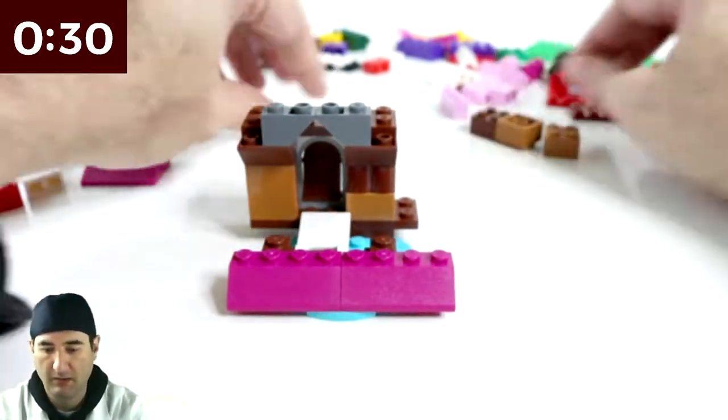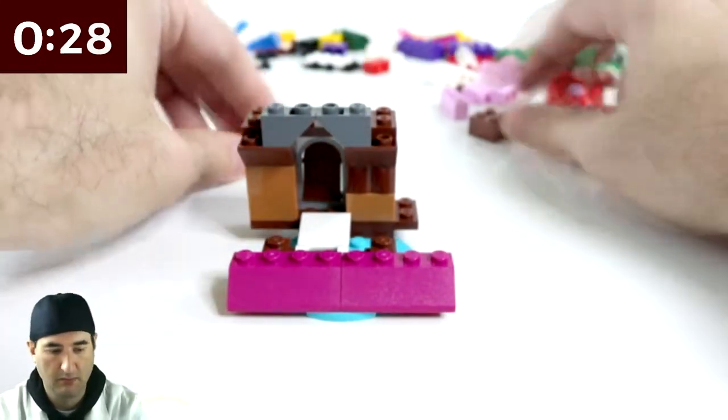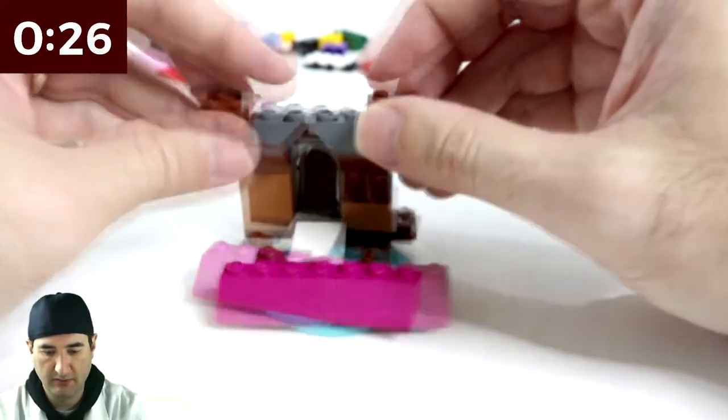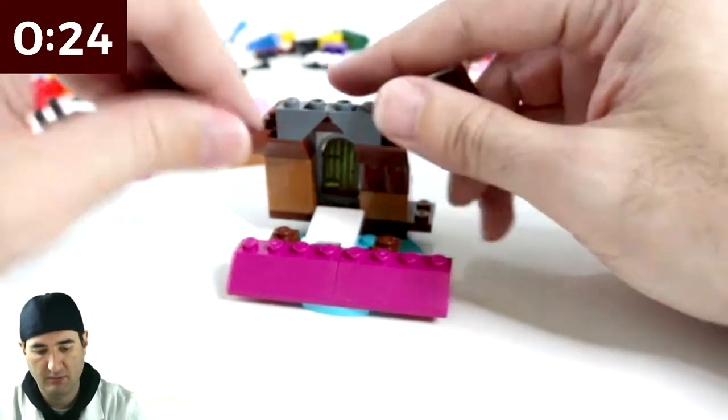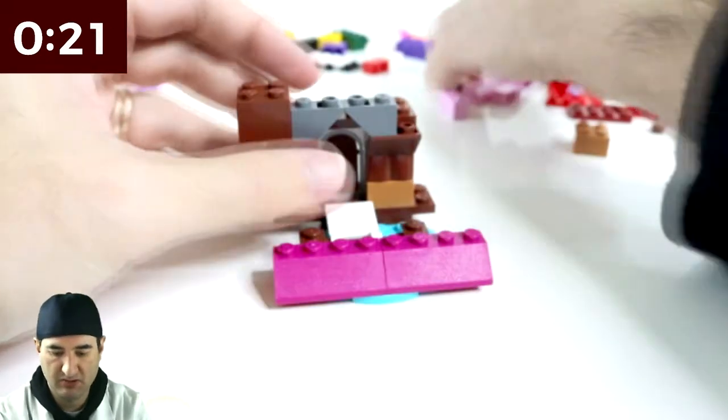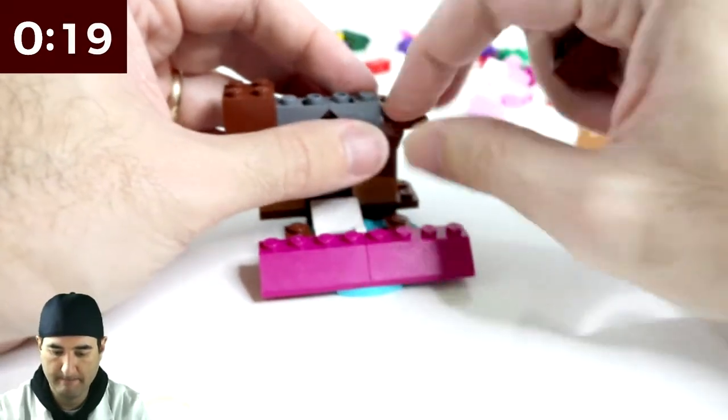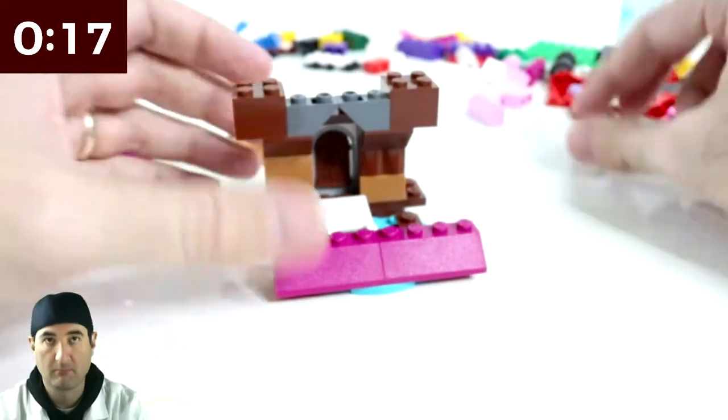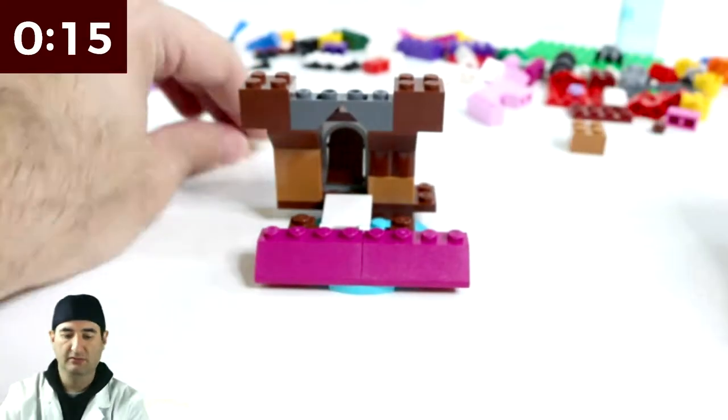Yeah. And then these go here with a little bit of this underneath it, so we don't see that gap. Yeah. That's a castle and a drawbridge.